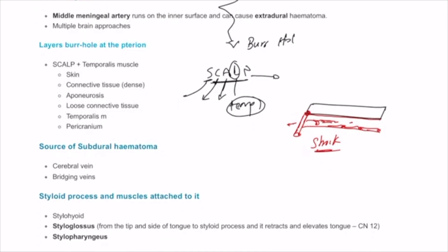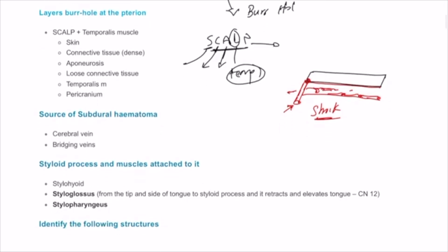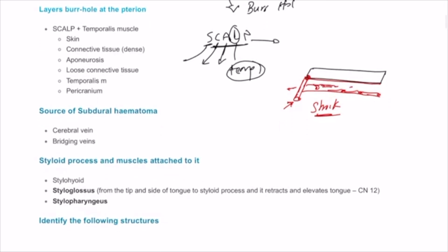Styloid process muscles attached to it will all start by stylo, and you have to the pharynx, so stylopharyngeus muscle, and to the tongue, so styloglossus muscle, and to the hyoid bone, stylohyoid muscle. So you have three muscles attached to the styloid process.